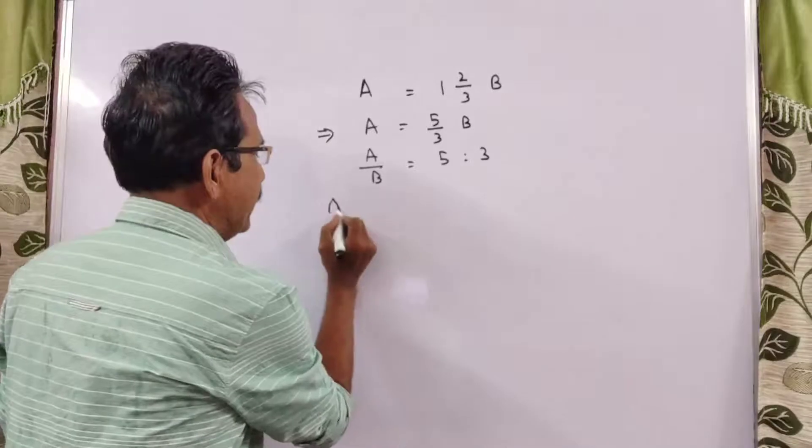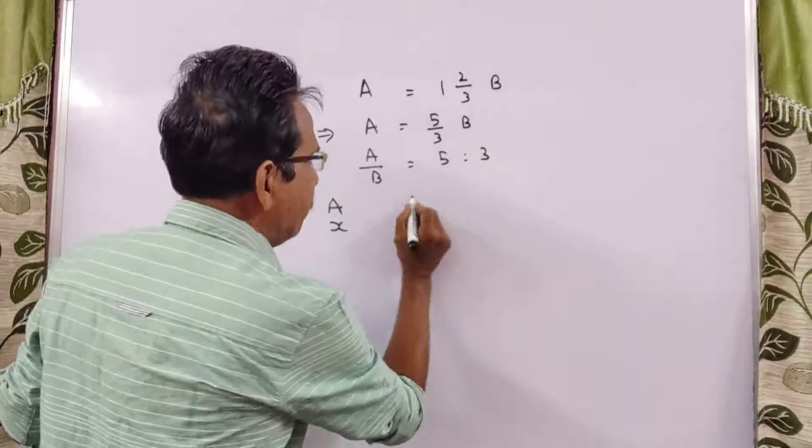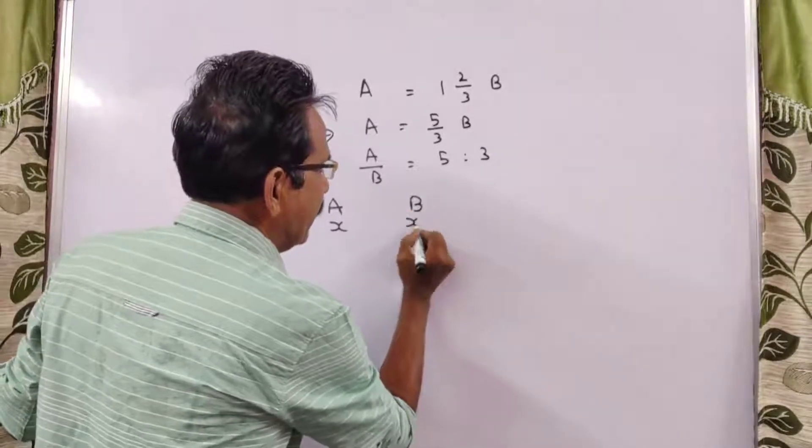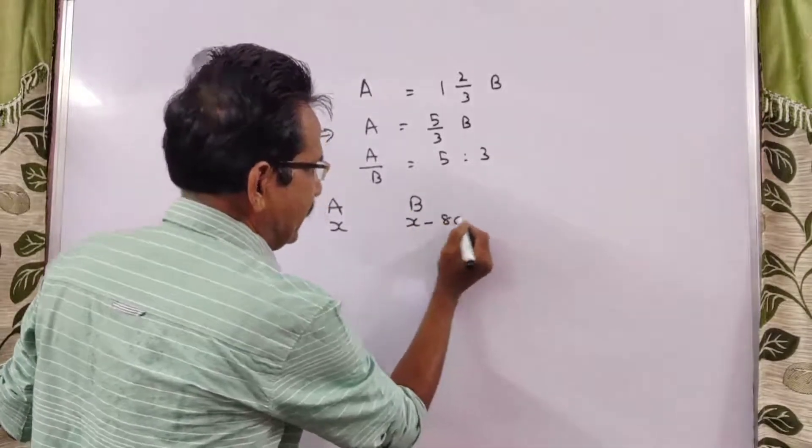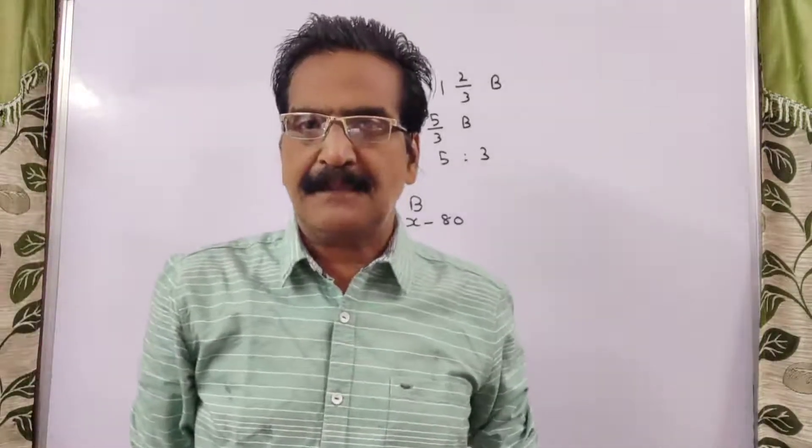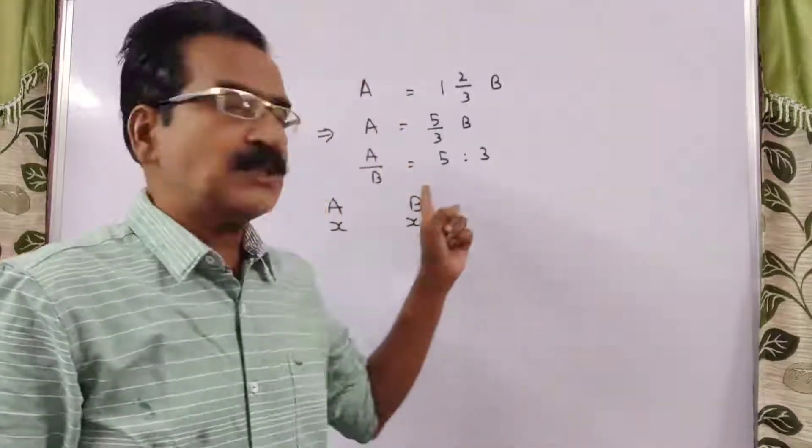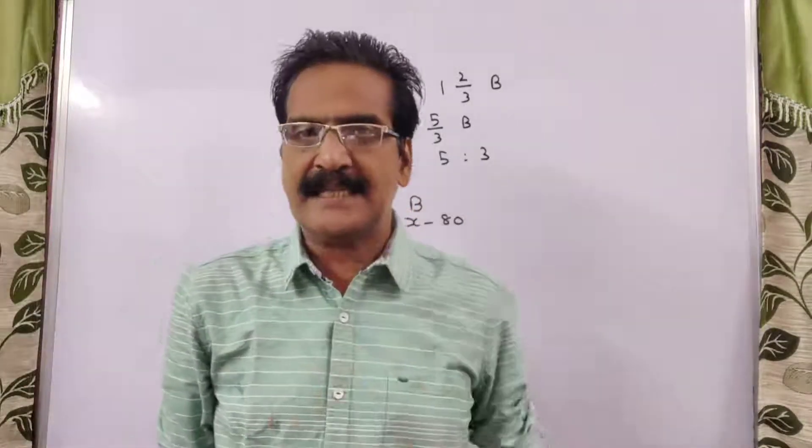If A runs x meters, B has to run x minus 80 meters. A gives B a start of 80 meters means if A runs x meters, then B has to run only x minus 80 meters.